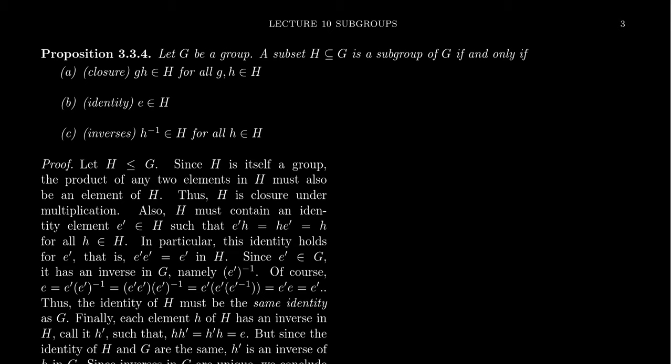This idea of restricting the operation to a subset, if done successfully, is referred to as the closure property. We say the subset H is closed under multiplication if whenever you take a product of two things in H, it lands back in H itself. So if g and h are in H, then g times h is in H as well.